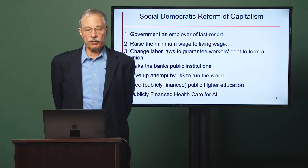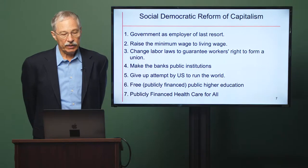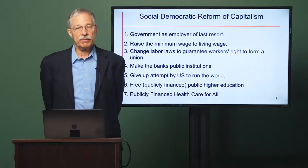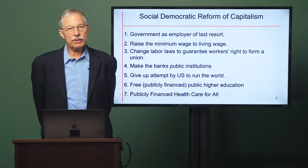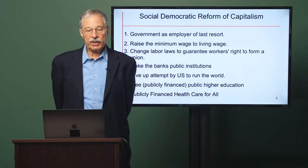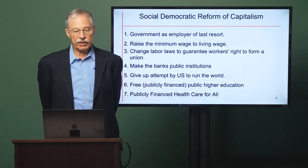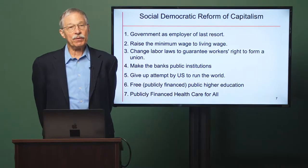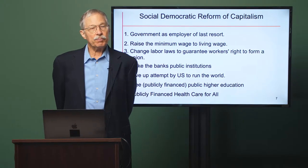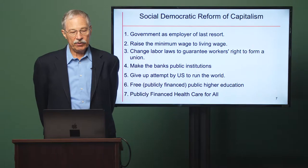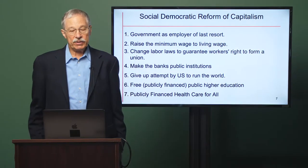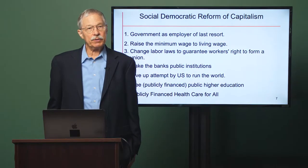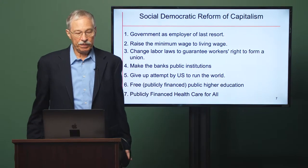What do I mean by social democratic reform of capitalism? Here are some policies and institutions. First, the government would act as employer of last resort, meaning any worker who could not find employment in the private sector would be hired by the government on some socially necessary job aimed at eliminating unemployment. Second, raising the minimum wage to a living wage, where a living wage means enough to support people at a decent living standard. Third, changes in the labor laws to guarantee workers' right to form a union. Surveys show that a sizable majority of American workers would like to belong to a union, but less than 10% are able to.